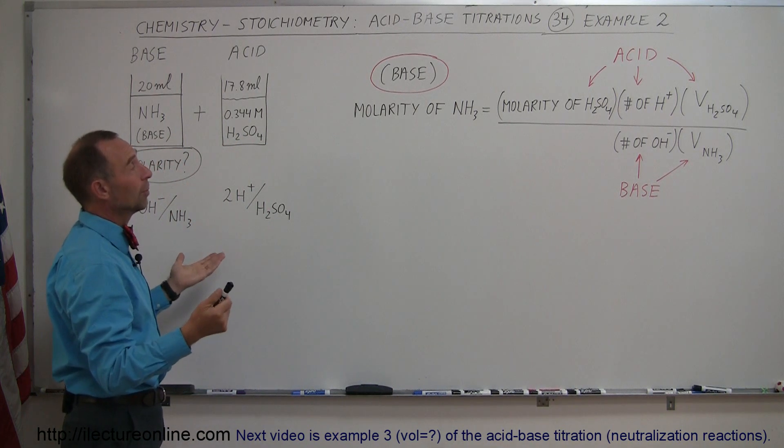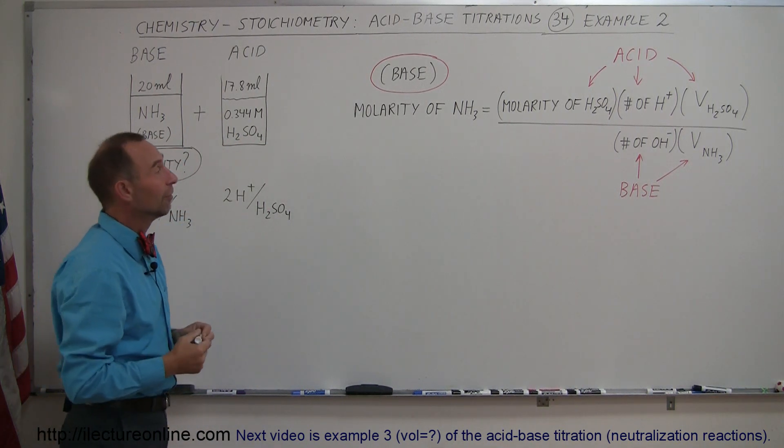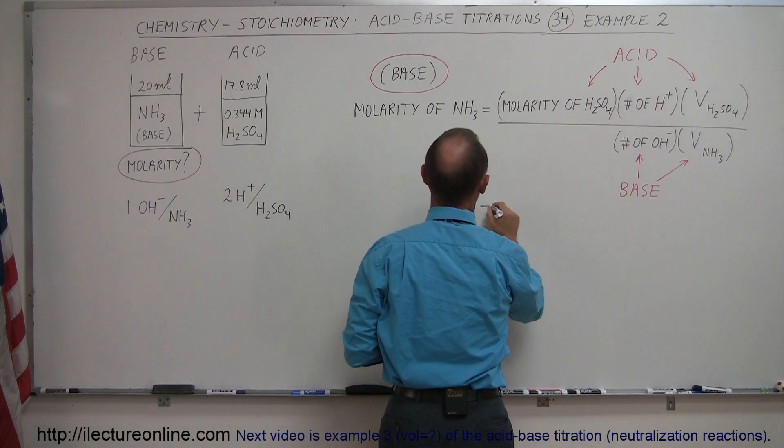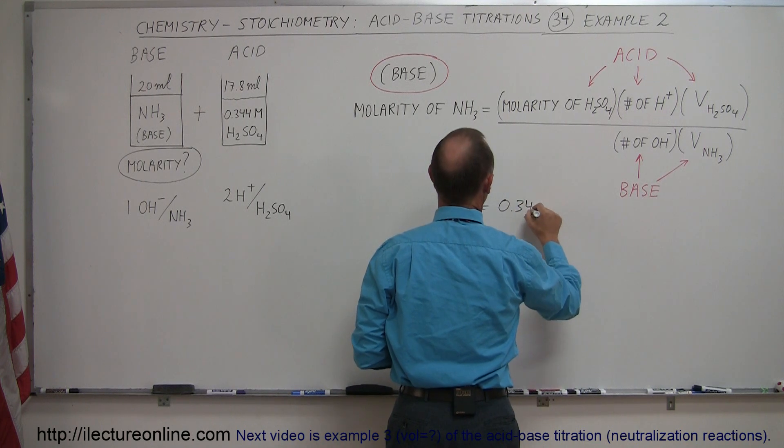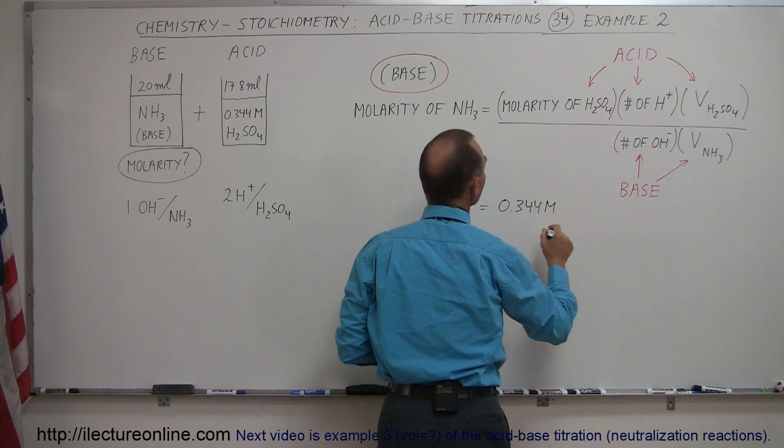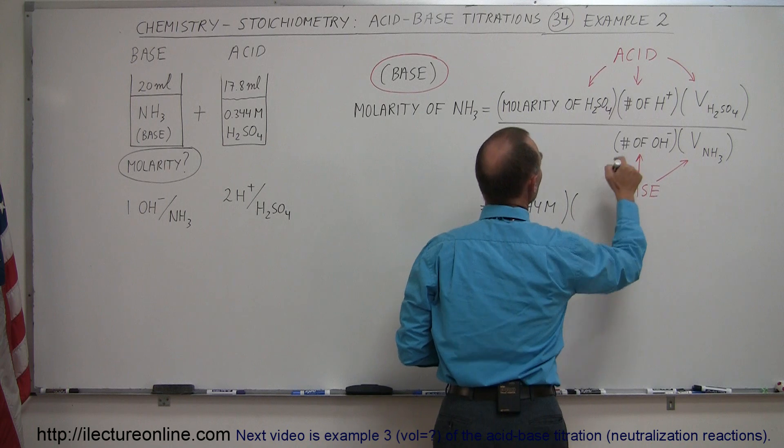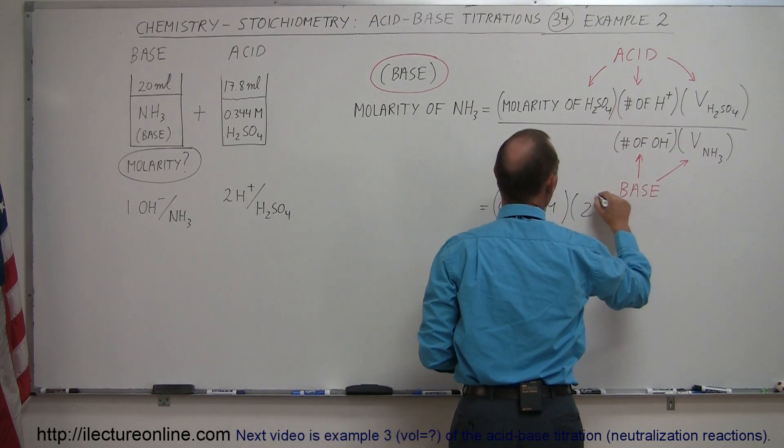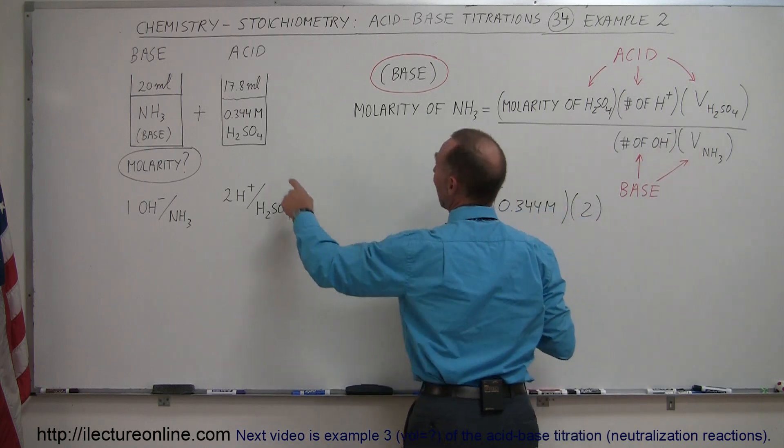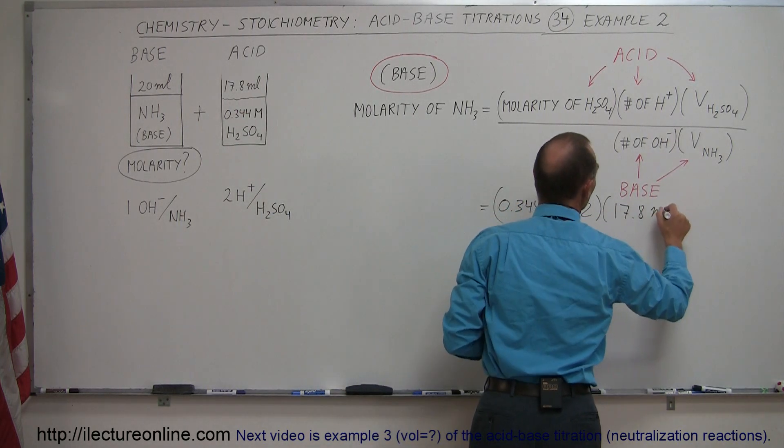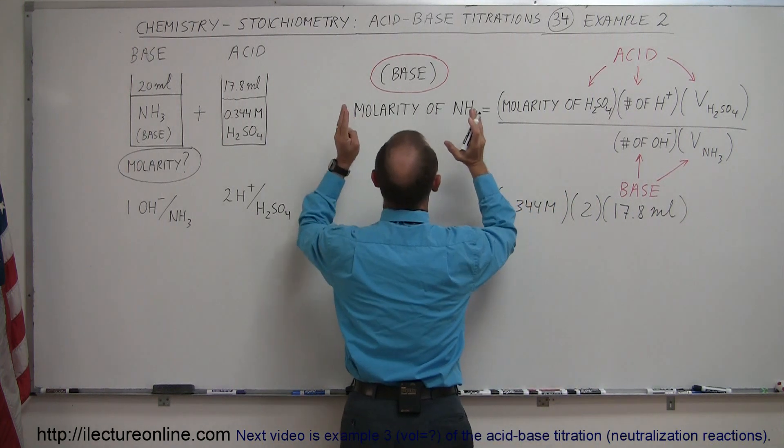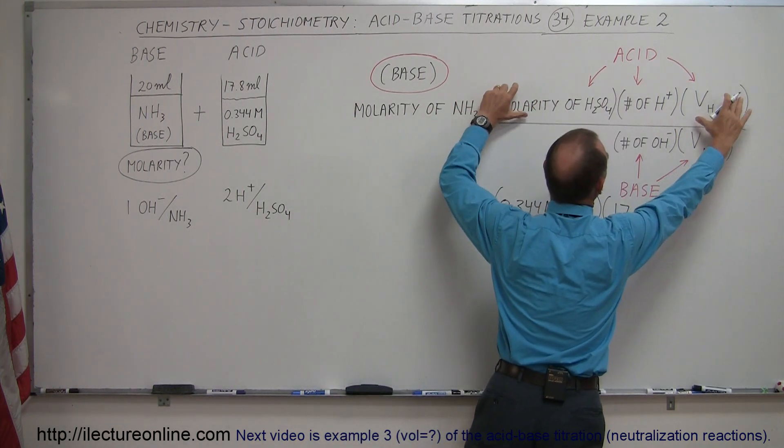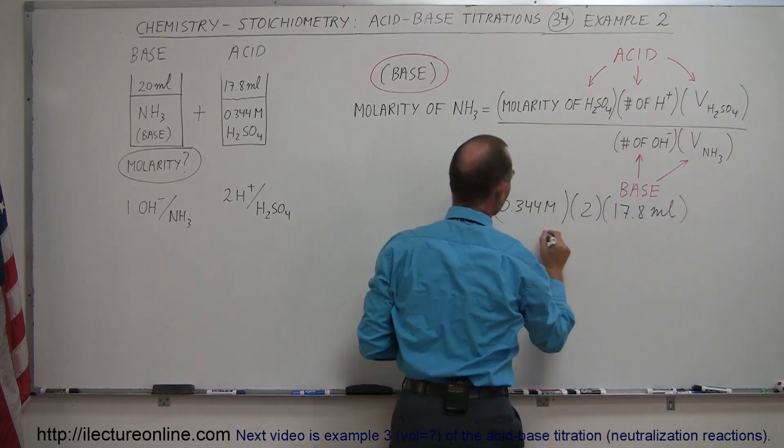Now all we have to do is plug in the numbers, and now will come the molarity of the base. So what was the molarity of the sulfuric acid? It's right here, so this is equal to 0.344 moles per liter. Multiply the times the number of hydrogen ions produced, which is in this case 2, and then multiply times volume of the acid needed, which was 17.8 milliliters. So again, if you're looking for the molarity of the unknown, and the unknown is the base, you want to put all the acid information in the numerator and all the base information in the denominator.